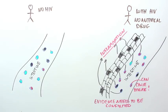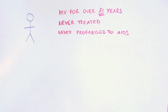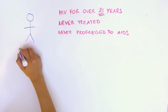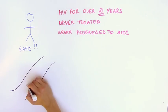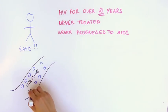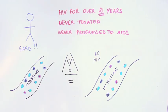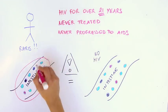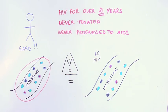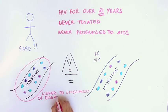Interestingly, the scientists also studied one individual that had HIV for over 21 years and was never treated but never progressed to AIDS. This is very rare, and when scientists looked at the gut microbiome of that individual, it looked just like the gut microbiome of a person without HIV. This again provides evidence that the composition of the gut microbiome may be linked to the likelihood of disease progression to AIDS.